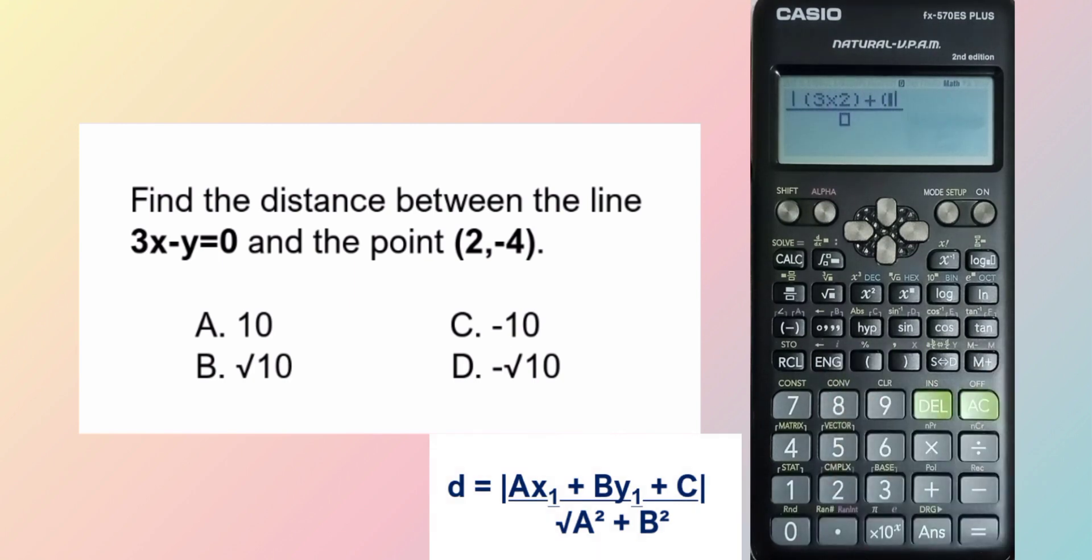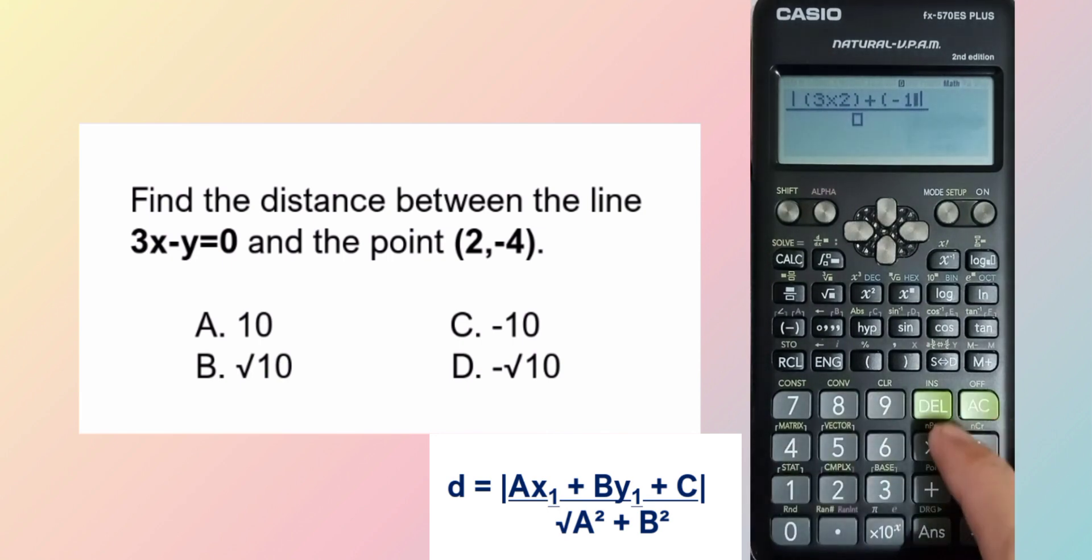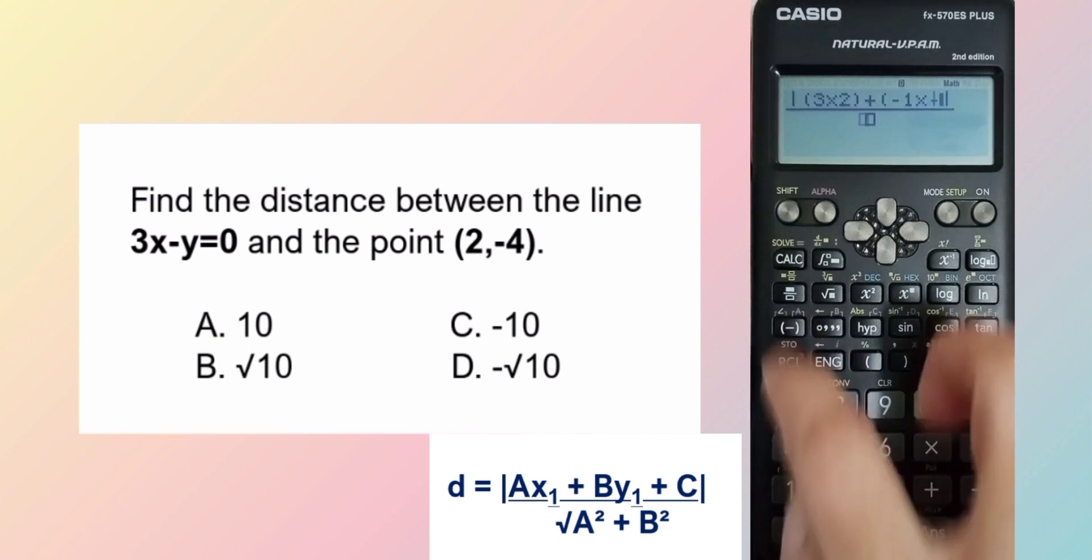Plus B, which is the coefficient of y. In our case, we have negative 1 times y sub 1, or the y coordinate of the point, negative 4.